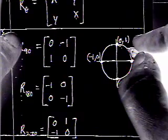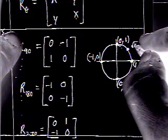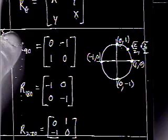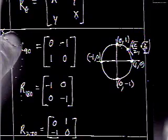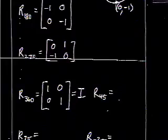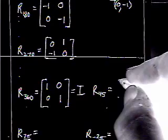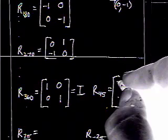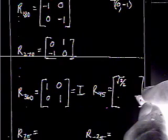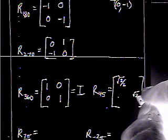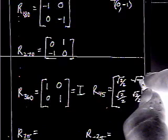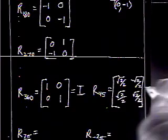What about 45 degrees? That's the point (radical 2 over 2, radical 2 over 2) on the unit circle. Applying the pattern — x value, x value, y value, opposite y value — gives us the rotation 45 matrix with radical 2 over 2 in all four entries, with the bottom left being negative radical 2 over 2.